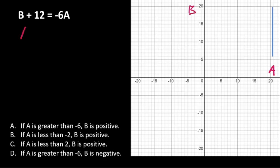So let's start with a equals 0. In this case, b plus 12 equals minus 6 times 0, b equals minus 12. If a is 0, b is minus 12.